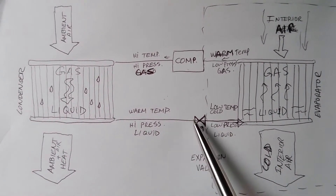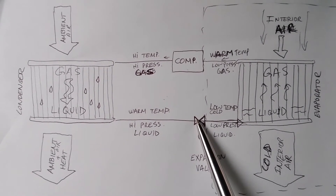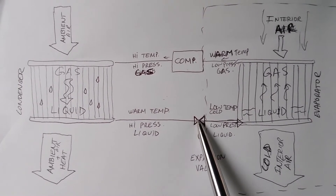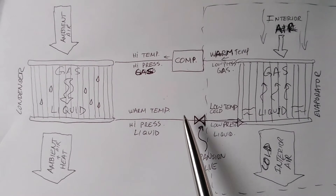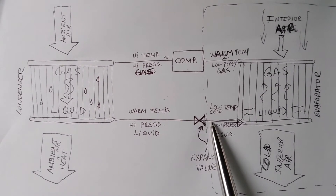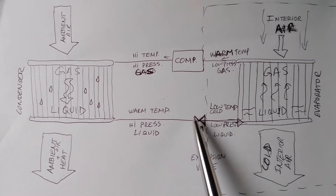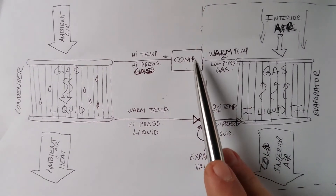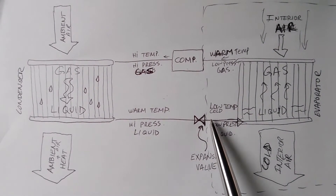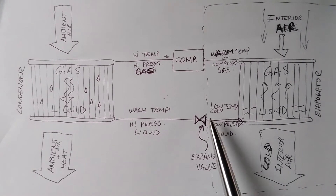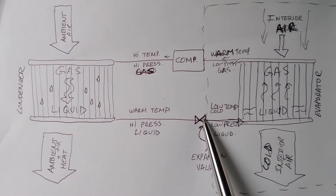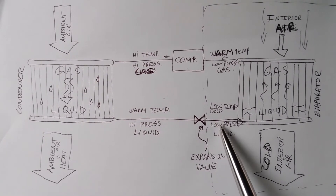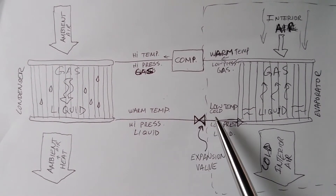The cooled high-pressure liquid comes up to this restriction, and as it comes out the other side there's no longer a restriction, so the high-pressure liquid loses a lot of its pressure. Once past the expansion valve it can flow freely back to the compressor. The moment you drop its pressure on the other side, that liquid becomes a low-pressure, low-temperature liquid.